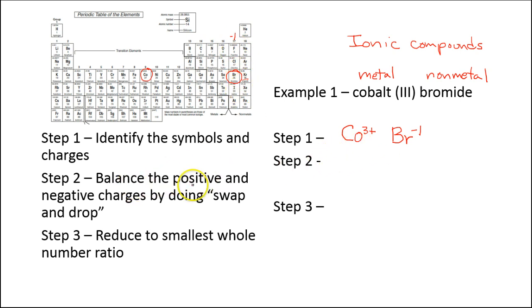Step 2 says to balance the positive and negative charges by doing swap and drop. So now we need to have these add up to make a zero charge. So we have 3 positives here, so that means we will need 3 negatives on this side. So we can also do this by our swap and drop. So I'll rewrite this here. Swap and drop allows us to do that balancing very easily. So we do swap and we drop. The charges become subscripts. So now we have Co. We just have one of those. We don't write a 1. And then we have 3 of the bromide ions, and so we do a subscript 3.